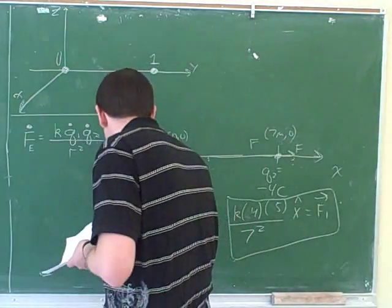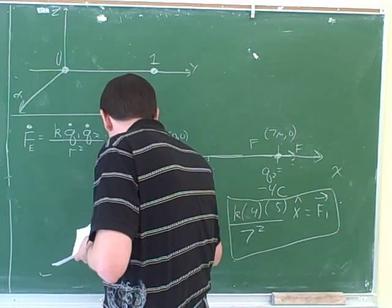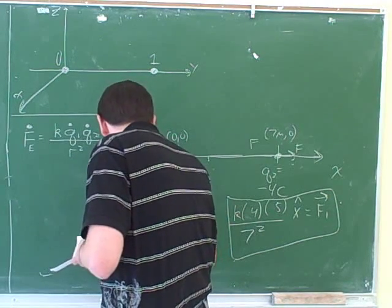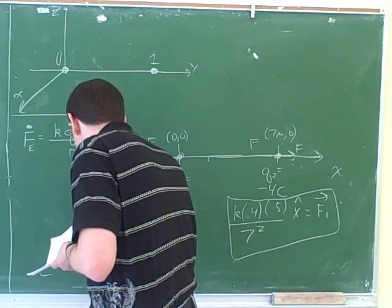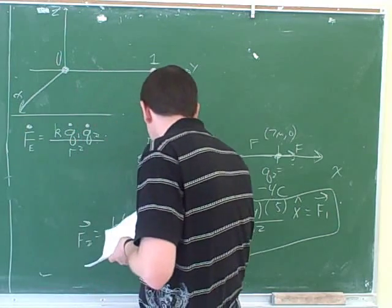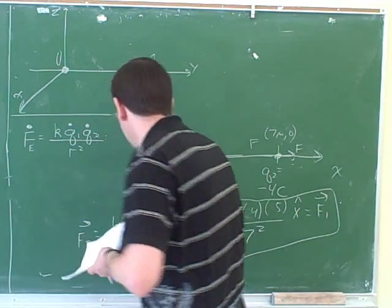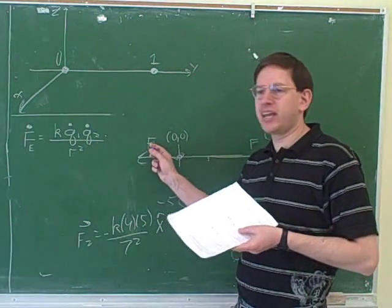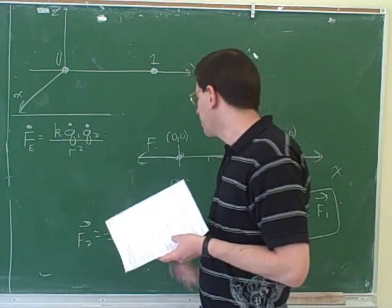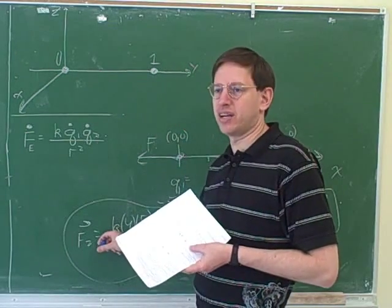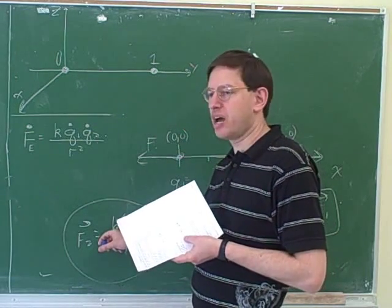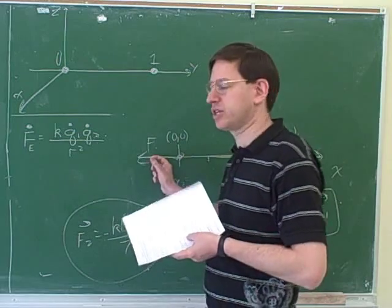And let's do the same for this. This would be k times 4 times 5 over 7 squared. This is force 2. But now, we see from our picture, this is in the negative x direction. So now, I would manually just tag on this negative sign here. We can just put in this negative sign ourselves, because we've already said this is in the negative direction.